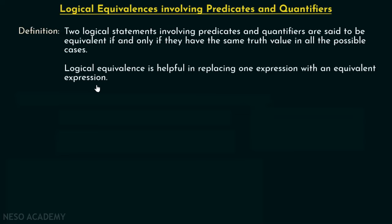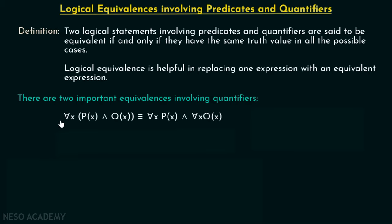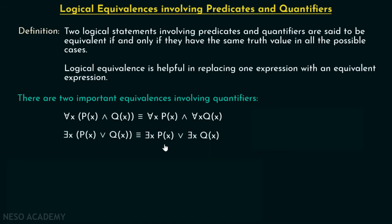Because we know that one statement is equivalent to another statement, we can replace it. There are two important equivalences involving quantifiers. The first one is: for all x, P(x) ∧ Q(x) is equivalent to for all x P(x) and for all x Q(x). The second equivalence is: there exists x, P(x) ∨ Q(x) is equivalent to there exists x P(x) or there exists x Q(x).